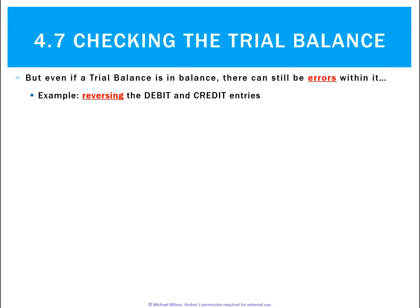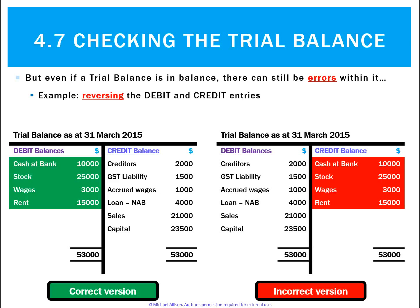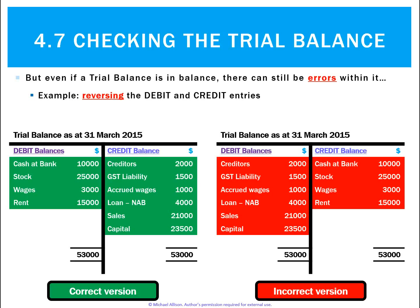Another error is if you simply reverse every single debit and credit. Here's the trial balance on the left — we've got debits of cash, stock, wages, and rent, so all assets and expenses with debit balances. On the credit side, we've got liabilities like creditors, revenue in sales, and owner's equity in capital. What if you simply got them the wrong way around? All your debits entered as credits and all your credits entered as debits — that's going to balance to the exact same number, just with every entry on the wrong side of the ledger.